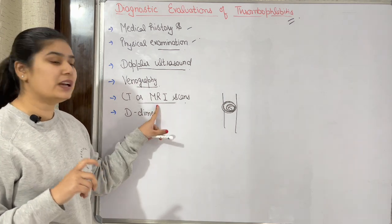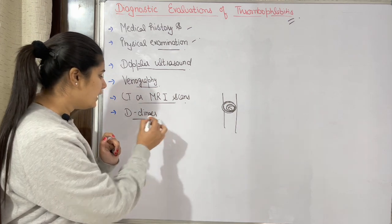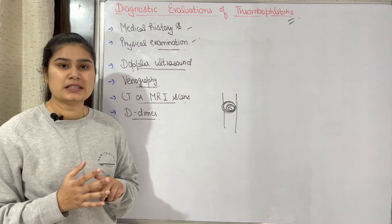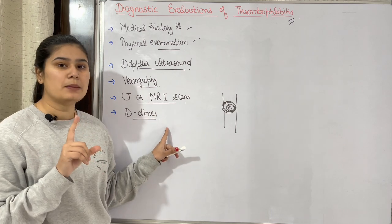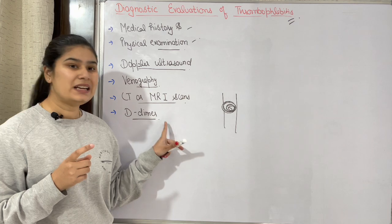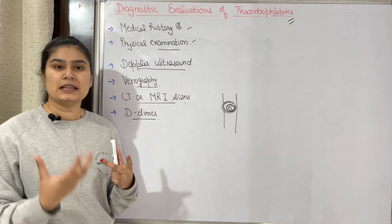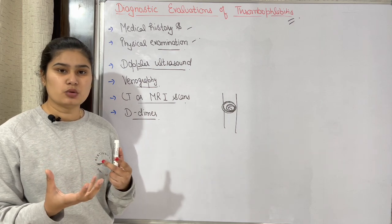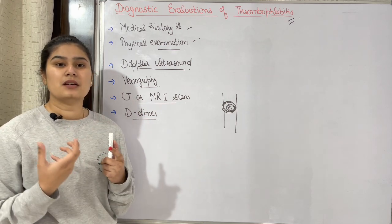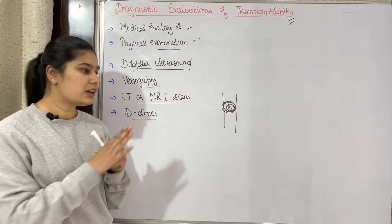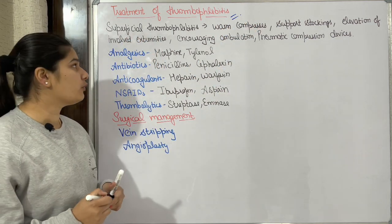Next are CT scan — computerized tomography — and MRI scan — magnetic resonance imaging — which provide clearer visualization of the veins. Next is D-dimer, which is a blood coagulation test used to identify clots. D-dimer is a protein substance released when a clot in the body undergoes fibrinolysis — meaning it is degraded or dissolved. A high level of D-dimer indicates the presence of a clot in the body.